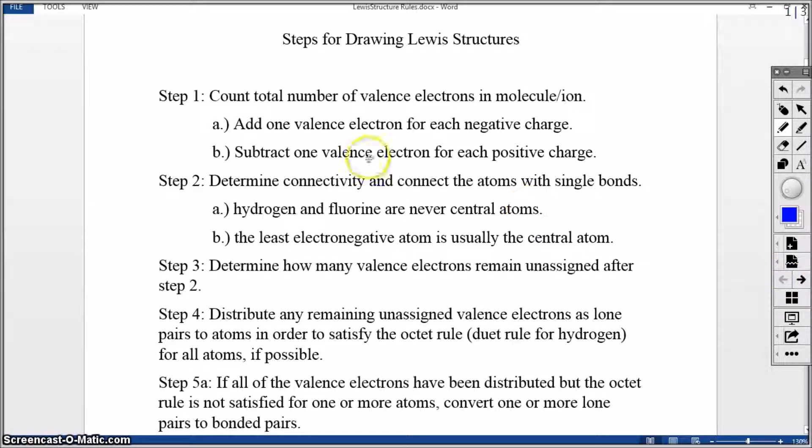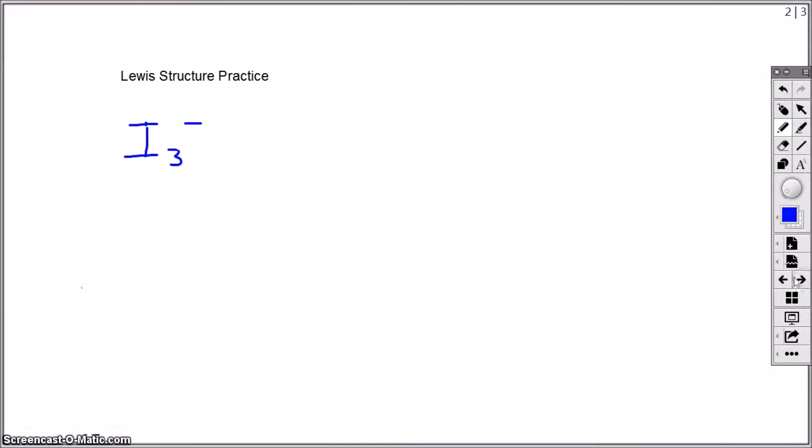In drawing these structures, we like to follow these four, possibly five, systematic steps. In the first step, we're simply counting how many valence electrons this molecule or ion has. So in step one, look at the formula. We have just three iodine atoms.